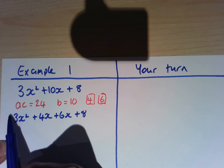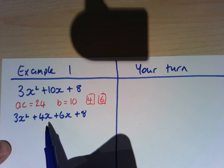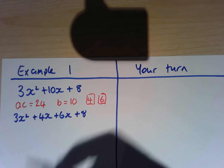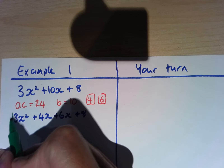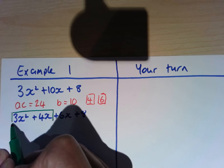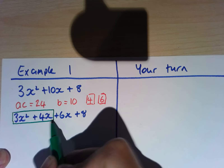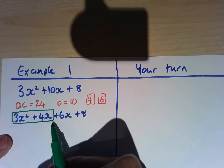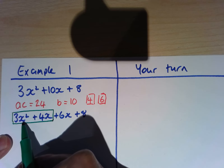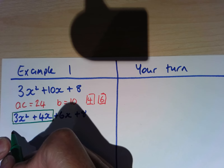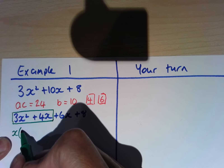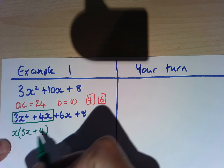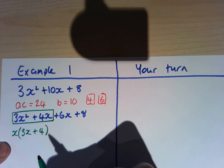We're now going to factorise this part here — the 3x squared plus 4x. If I factorise 3x squared plus 4x, x is a common factor, and inside my brackets I'm going to have 3x plus 4. That gives me 3x squared plus 4x.